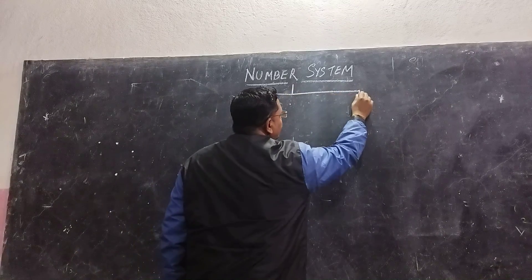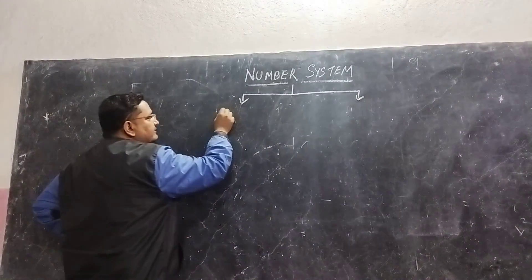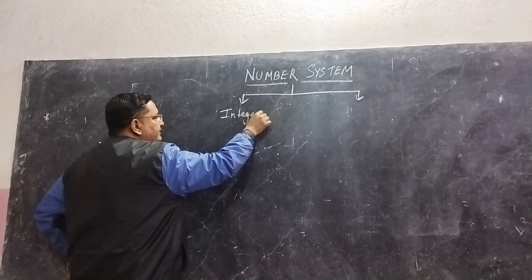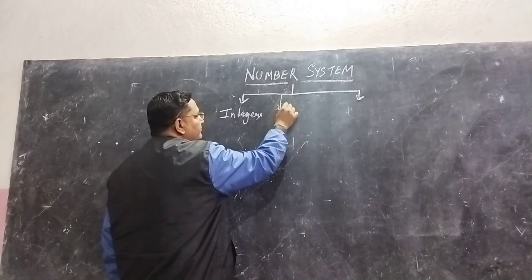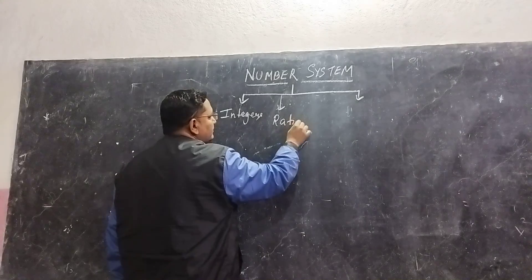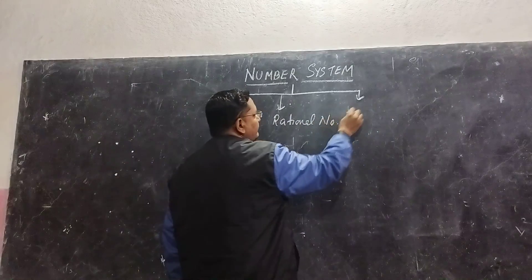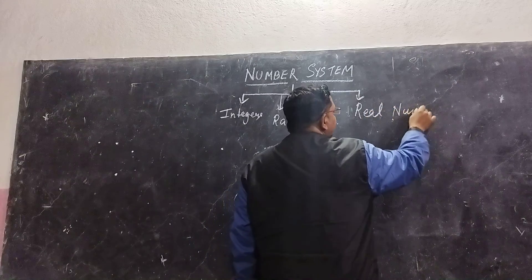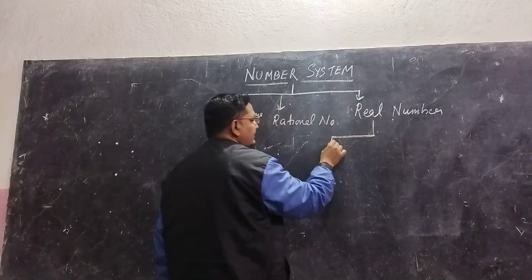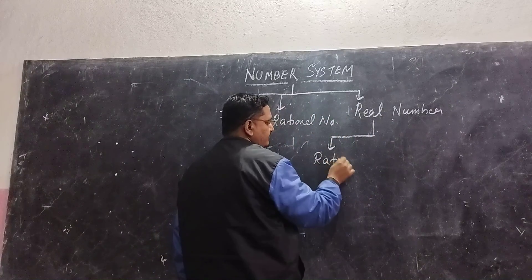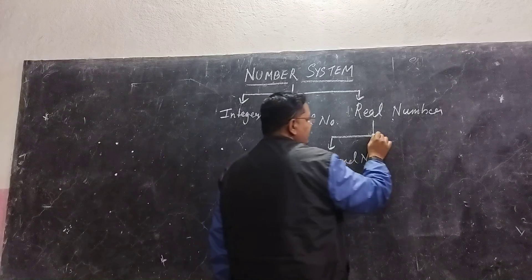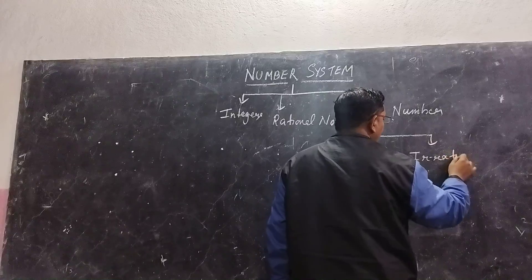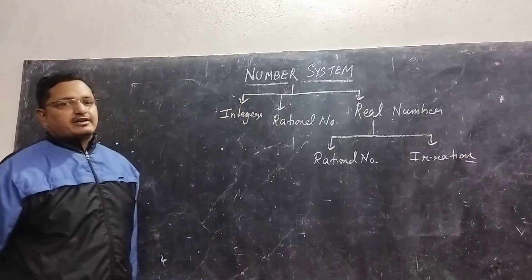From class 7 onwards, we study rational numbers. First is integers, which we have in class 7. After that we study rational numbers, and then we learn about real numbers. In real numbers, there are two types: rational numbers and irrational numbers.